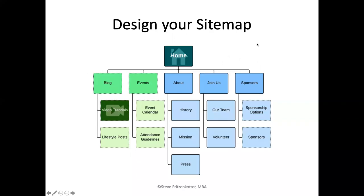Another assignment — going into week three — is you're going to build a site map. Would you build anything without a map? What you have is the homepage and then you have the menu items on top — we call this the navigation bar. You'll have about the business, join us, communicate with us, who the sponsors are, what are events, and what's in the blog page. Underneath each one of these key terms on the navigation bar, there are other pages that link to it as a sub-group. I'm going to need you to build a site map for the business itself.